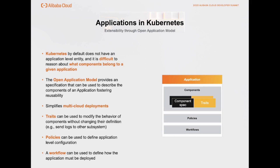This is where the Open Application Model (OAM) comes in — it's a specification that defines the elements composing an application. These are: components (think of these as microservices), and traits, policies, and workflows which are methods to extend the capabilities of a component or specify how you want the application deployed. Traits allow you to take an existing component and, without changing it, modify its behavior — for example, by exposing an ingress to the outside world or redirecting logs to another collection system.